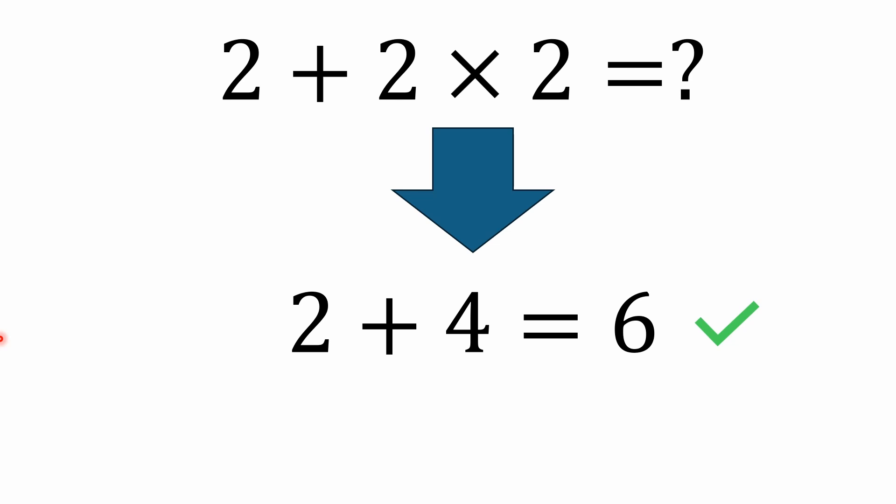So 2 times 2 is 4. So we bring down the 4. 2 plus 4 is 6. So it's a pretty simple problem overall, really. That's the answer.